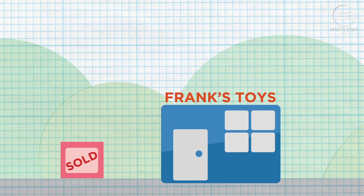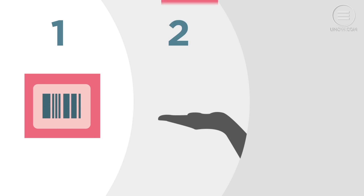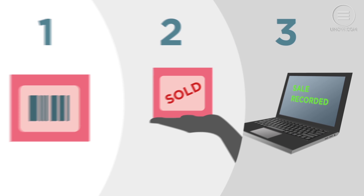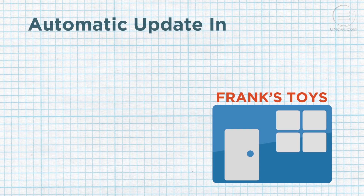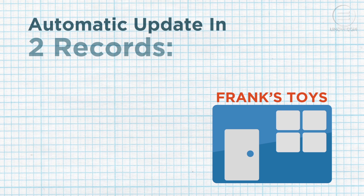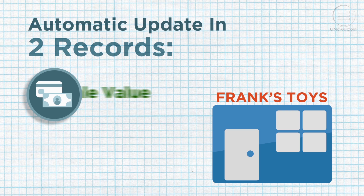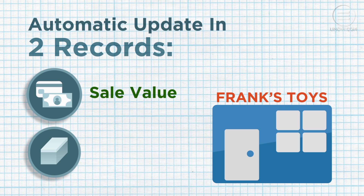Congratulations! You've made a sale! You scanned the barcode on the sold item, handed it to your customer, and your perpetual inventory system did the rest. You'll now see an automatic update in two of your accounting records. One reflects the sale value of the inventory, and the other reflects the reduction in your inventory balance.